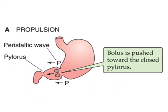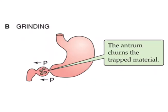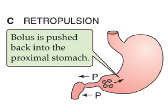First, the bolus is pushed towards the closed pylorus. The antral portion will grind this food. This is called antral systole. If solid pieces of food remain, the bolus is pushed back into the stomach and the process is repeated.